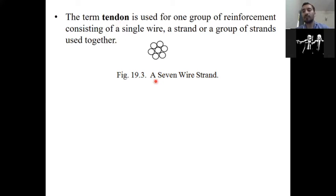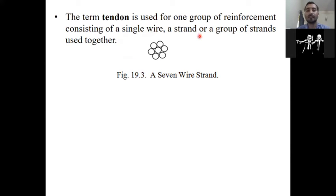For example, at the bottom layers you provided three strands — you have three strands, three wires. So this is a group; you will call it one tendon. So later we will see in more detail about strands and tendons. Now you have to remember we will use three technical terms: pre-stress steel wire, steel strand, and steel tendon.